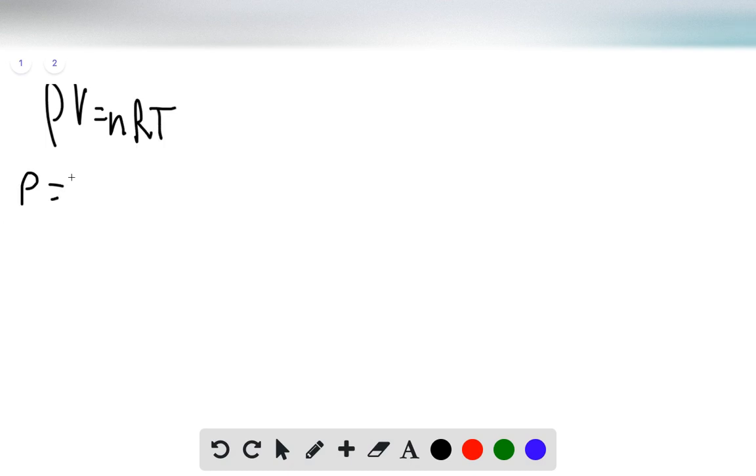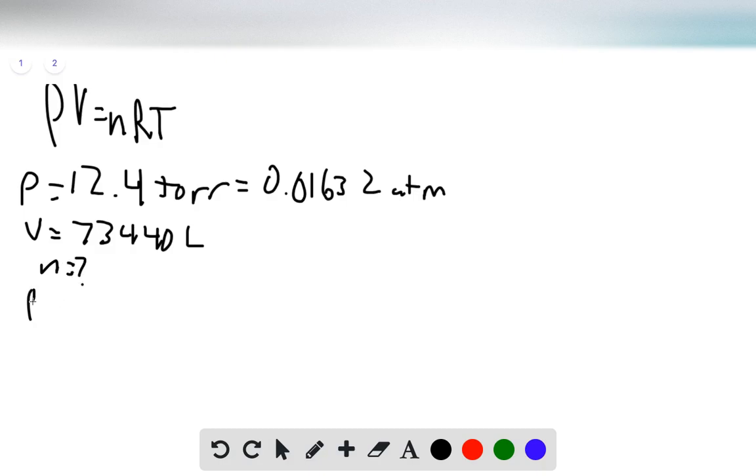Our pressure is given as 12.4 torr, which we divide by 760 to convert to atmospheres. That's 0.01632 atmospheres. Our volume we just found to be 73,440 liters. N is our unknown. Our R value is 0.082057 liter atmospheres per mole kelvin, and T is 655 kelvin.